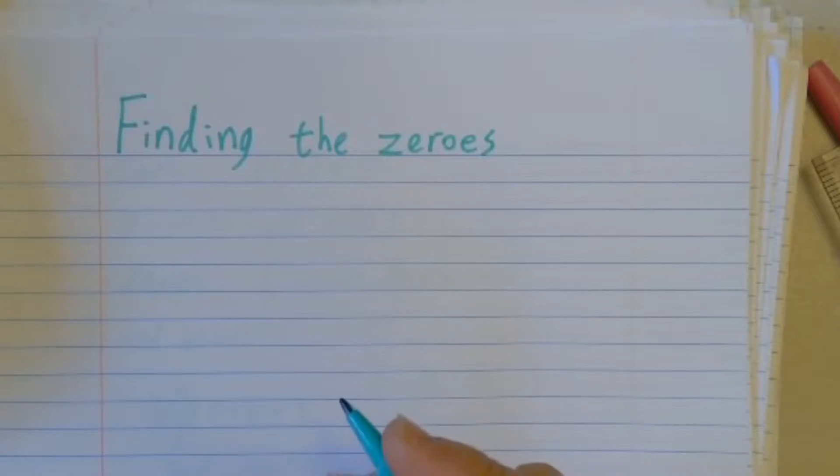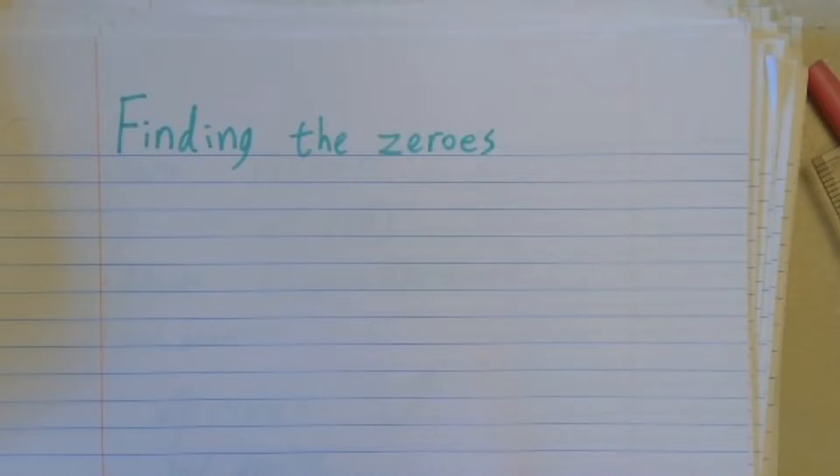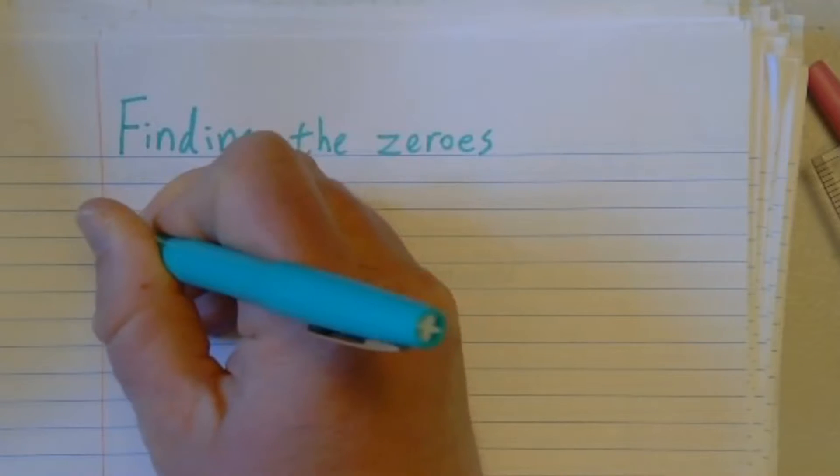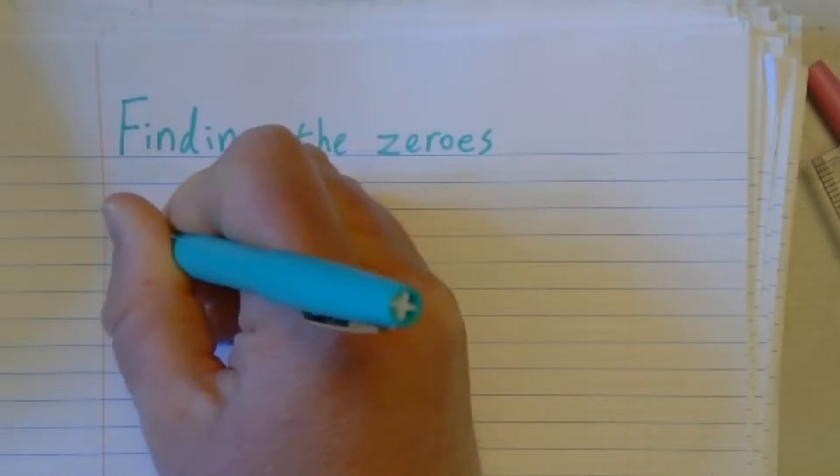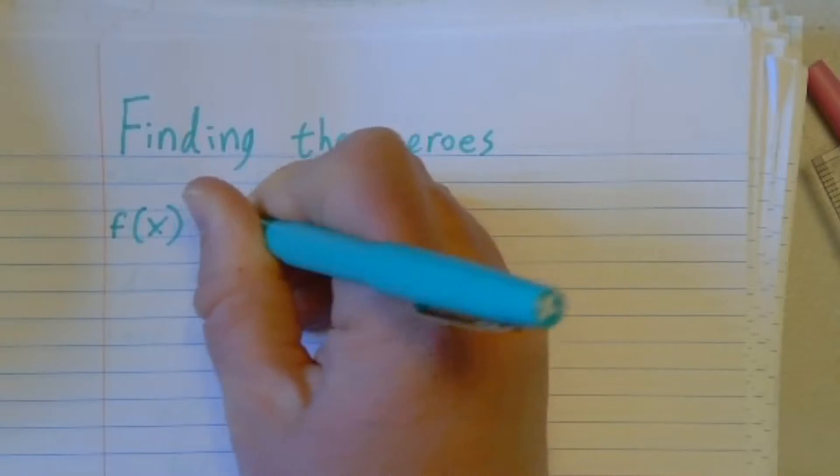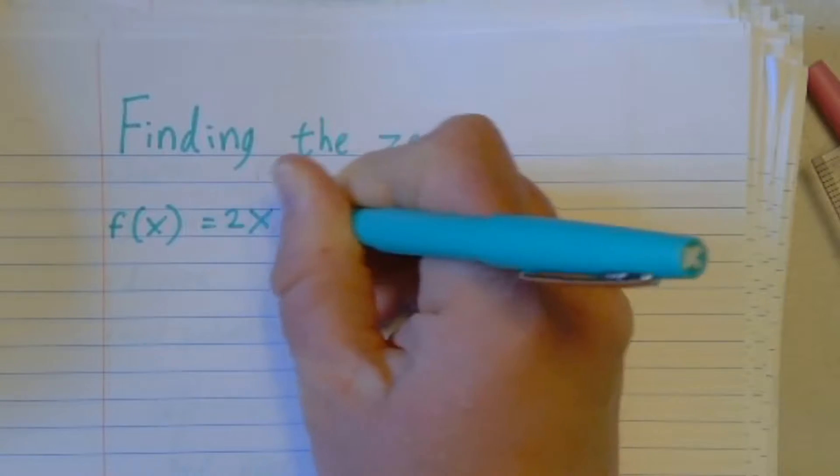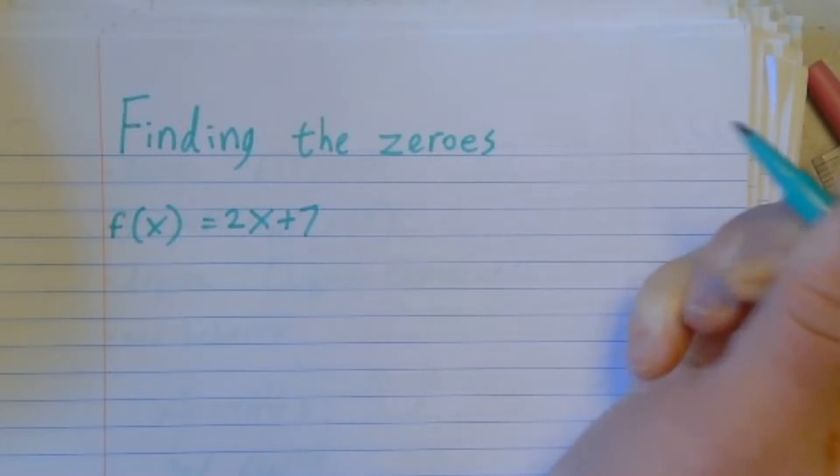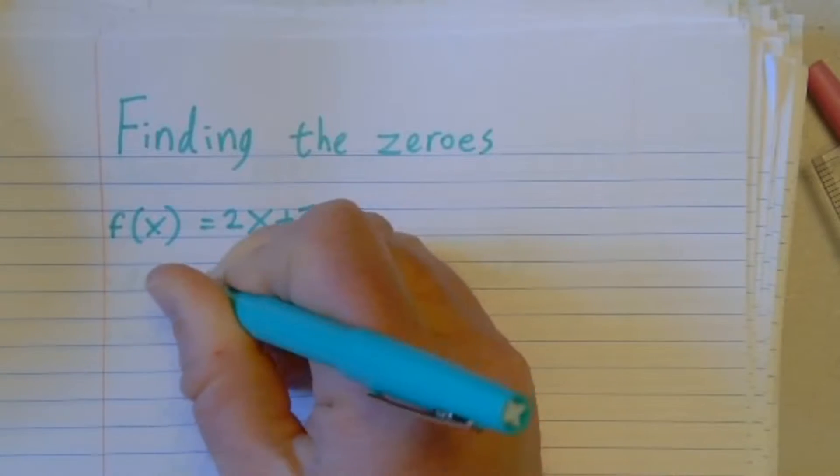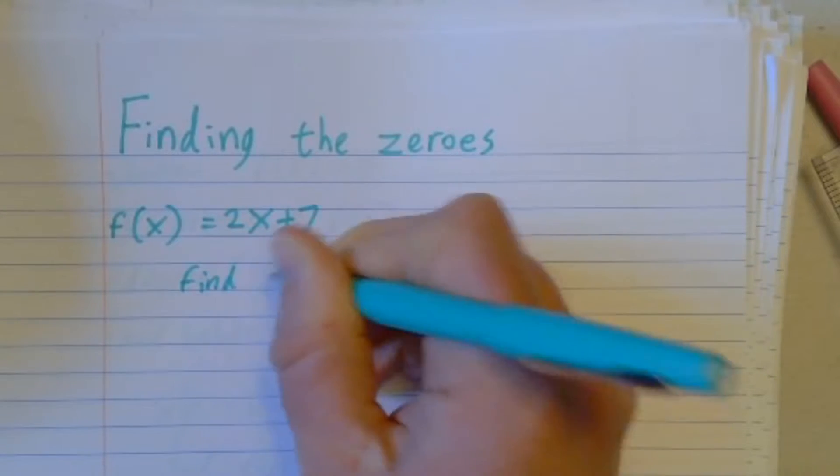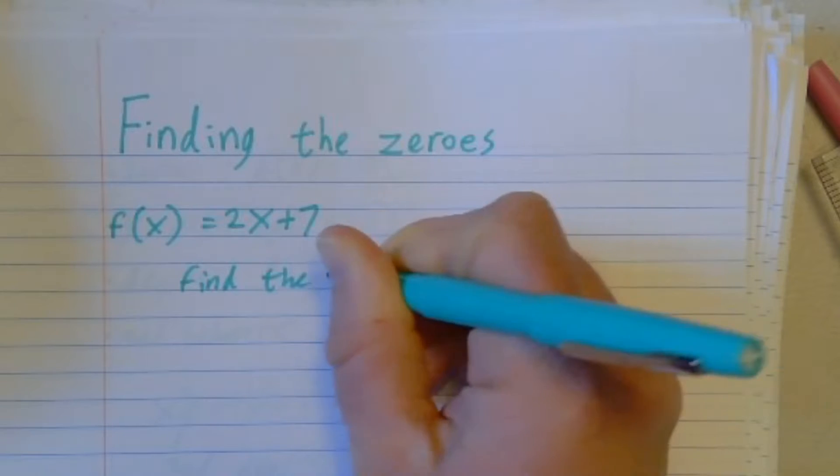So first we're going to look at a linear example. This is something you might have seen last semester. If I have f of x is equal to 2x plus 7 and I want to find the zeros...